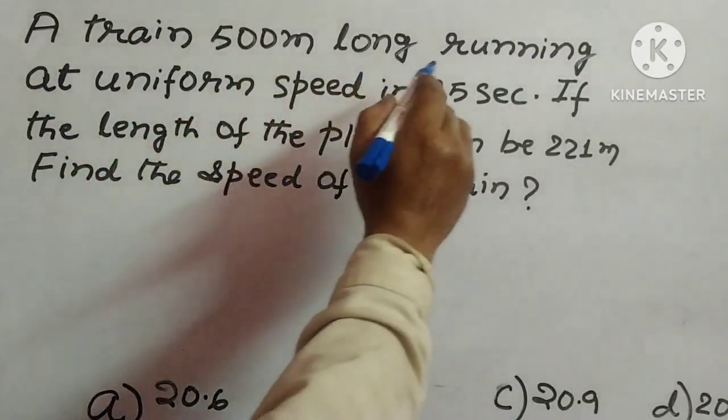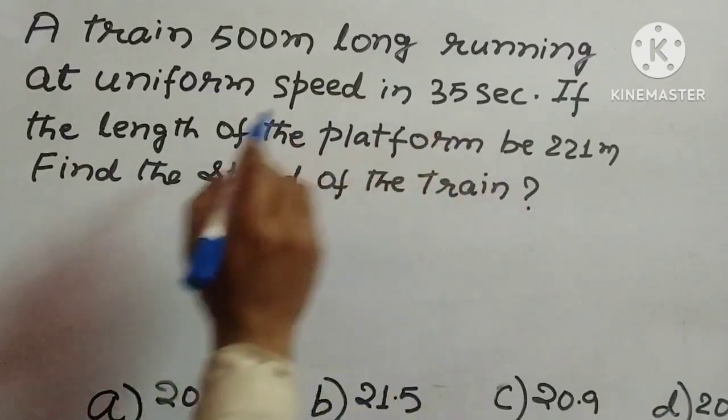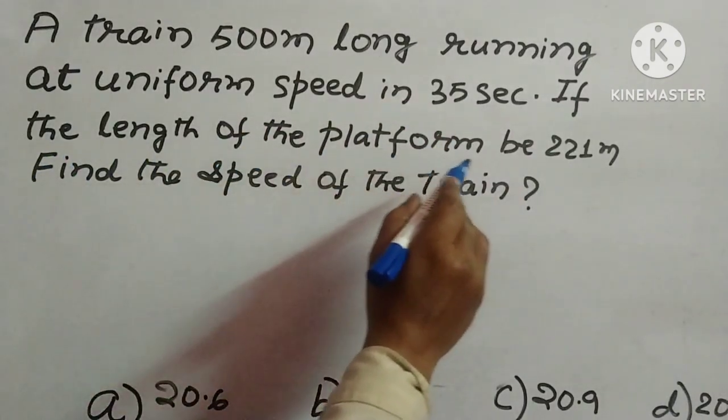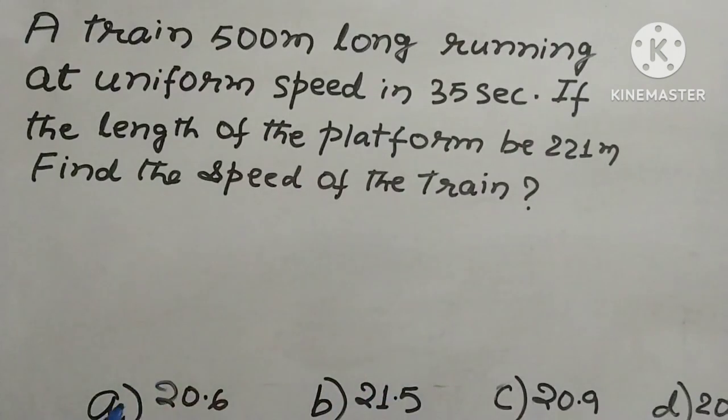A train 500 meters long running at uniform speed in 35 seconds. If the length of the platform is 221 meters, find the speed of the train. We need to find out the speed of the train.